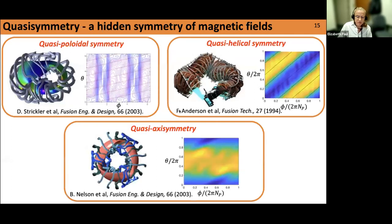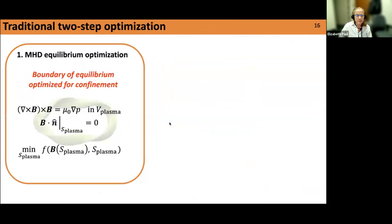We can also get quasi-axisymmetry, which is more analogous to axisymmetry as in a tokamak — the field strength contours wrap around the long way around the torus toroidally, but the shape of the surface is very far from being symmetric. To actually find magnetic fields that have this quasi-symmetry property is non-trivial; we have to use optimization tools. Typically this takes place in two steps: first, we optimize an MHD equilibrium by specifying the shape of the boundary of the plasma.